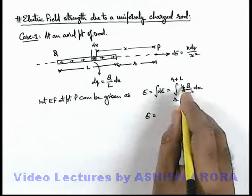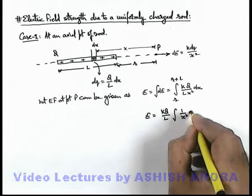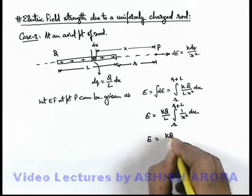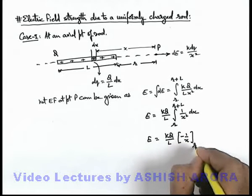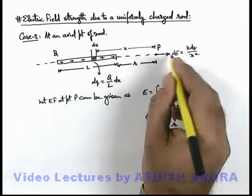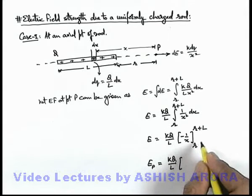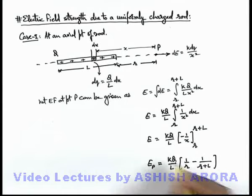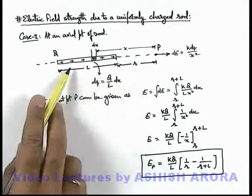In this situation, k·q/l are constants, so this will be the integration of (1/x²)dx integrated from r to r+l. This gives us k·q/l, and the integration of 1/x² is minus 1/x. Substituting the limits from r to r+l, the electric field at point P — located on the axis of the rod at a distance r from one end — is given by k·q/l multiplied by (1/r − 1/(r+l)). That is the result for the electric field strength at an axial point of a uniformly charged rod.